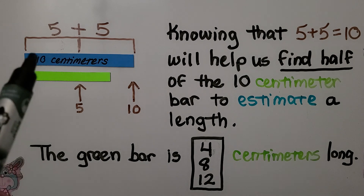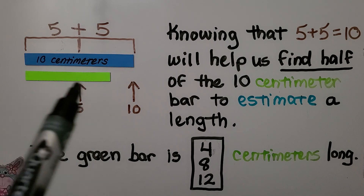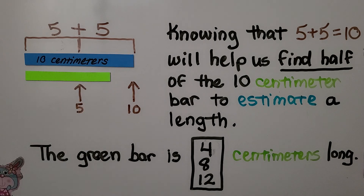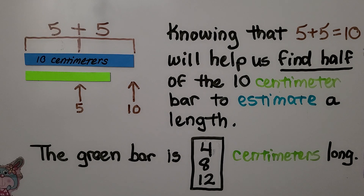Here we have a 10-centimeter strip and a green bar underneath it, and we don't know how long the green bar is. Knowing that 5 plus 5 equals 10 will help us find half of the 10-centimeter bar to estimate length.